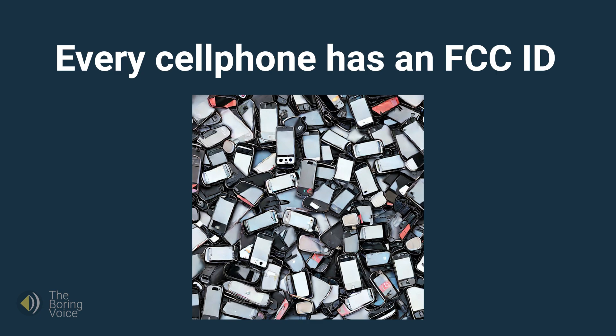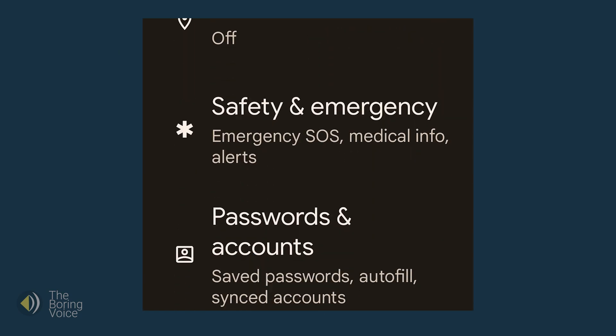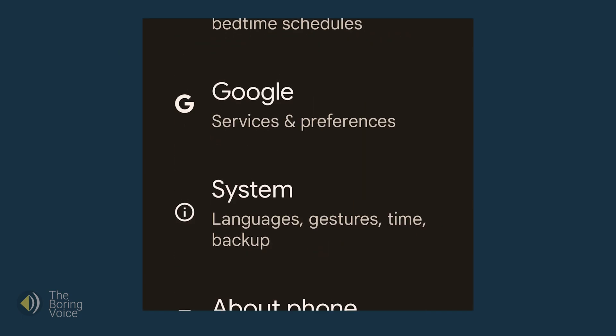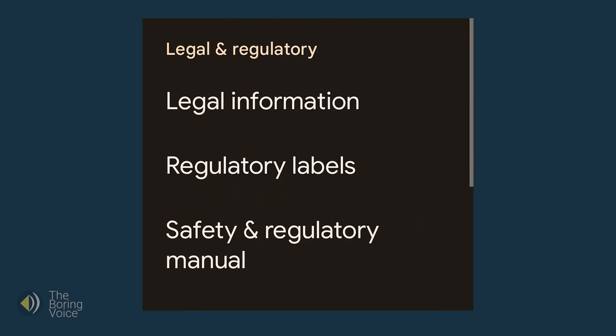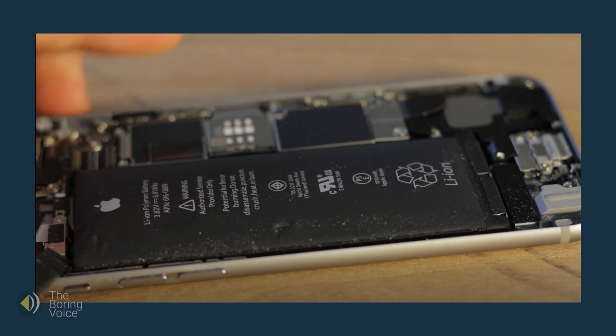Every cell phone has an FCC ID. The ID was probably on the product package you threw away, but that code is also embedded inside the operating system of the cell phone, usually under a section called regulatory labels or similar. It is also frequently located on the physical device under the battery.